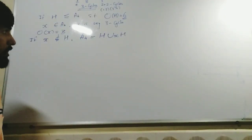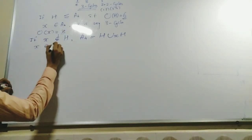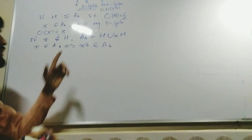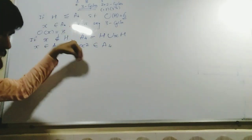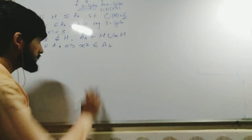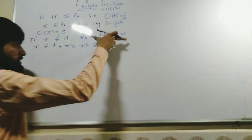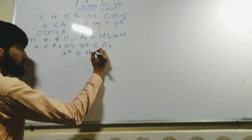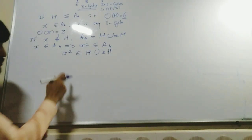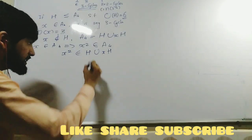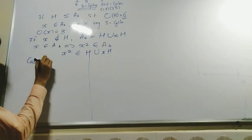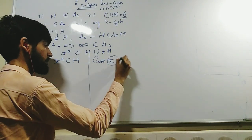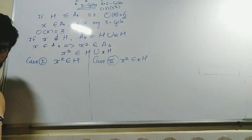Now, x is an element of A4, so x² is also an element of A4, because it is a group — any power of an element stays inside the group. That means x² must be inside H∪xH. When an element is inside a union, we get two cases: Case 1 — x² is an element of H, or Case 2 — x² is an element of xH.